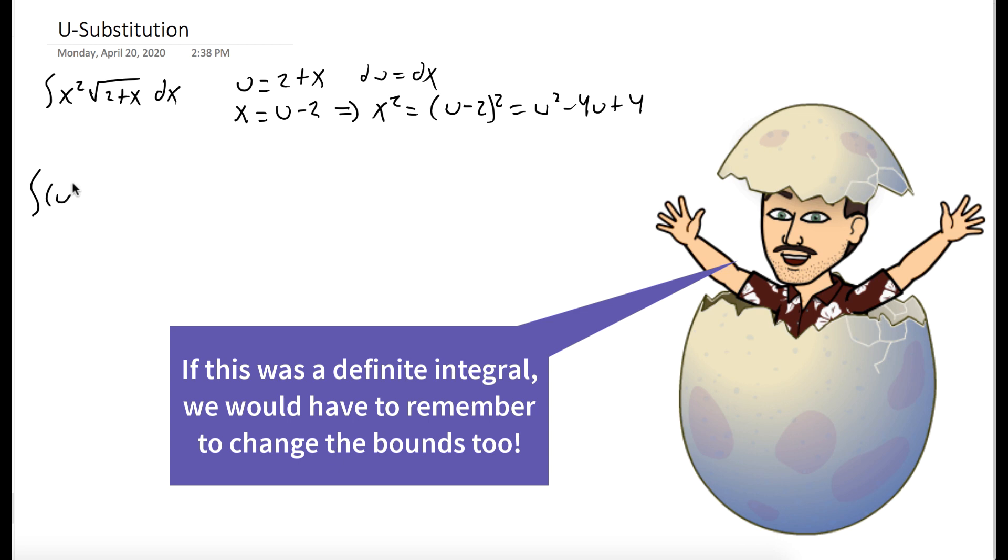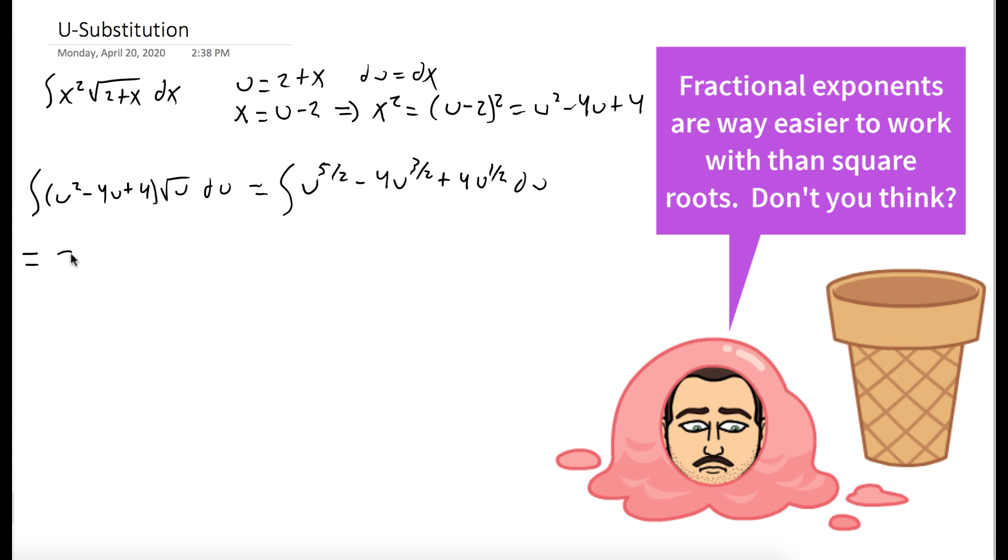So our integral we could write as the integral of u squared minus 4u plus 4 times the square root of u du. We could multiply or distribute that square root of u through and we're left with just a bunch of terms that could be integrated using the power rule.